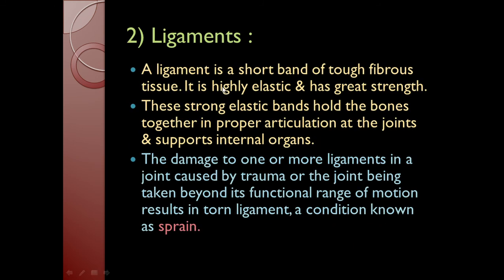Ligament is a short band of tough fibrous tissue. It is highly elastic and has great strength. These strong elastic bands hold the bones together in proper articulation at the joints and support the internal organs — ligaments connect bones to bones. Damage to one or more ligaments in a joint, caused by trauma or the joint being taken beyond its functional range of motion, results in a torn ligament, a condition known as a sprain.